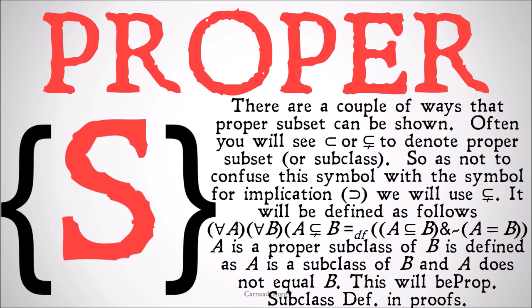It is going to be defined as follows: for all A and all B, if A is a proper subclass of B, that means by definition A is a subclass of B and it's not the case that A is equal to B. Hopefully that's pretty clear and intuitive. This is going to be the proper subclass definition in proofs.